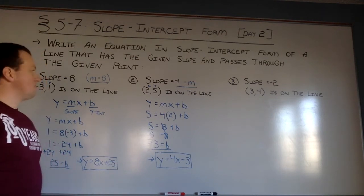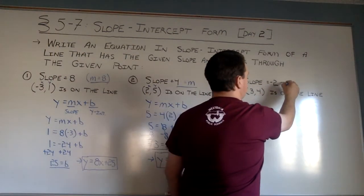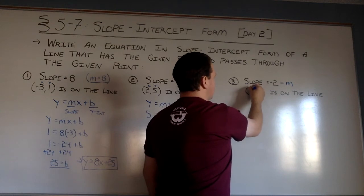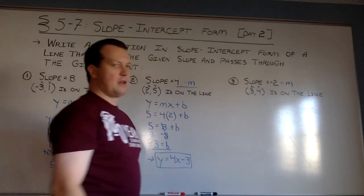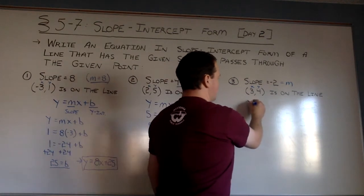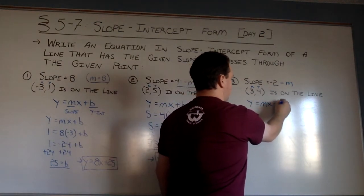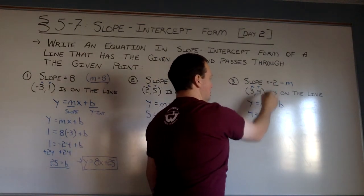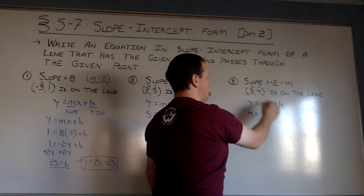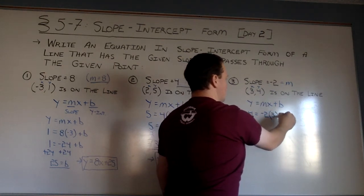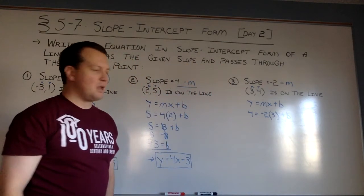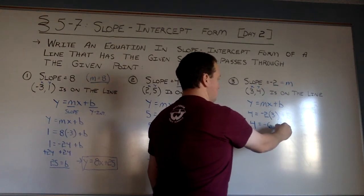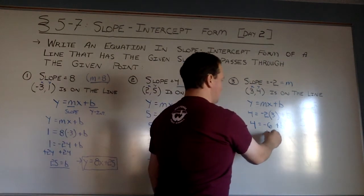Last example, I'm going to give you a negative slope. m is negative 2, and I have the x and y coordinates, 3 and 4, on the line. So again, I'm going to go to y equals mx plus b. Plug in. y is 4. m is negative 2. Times x is 3. Plus b. I'll multiply the m and x. Negative 2 times 3 gives me negative 6. Plus b. Get b alone, I'll add 6 to both sides.